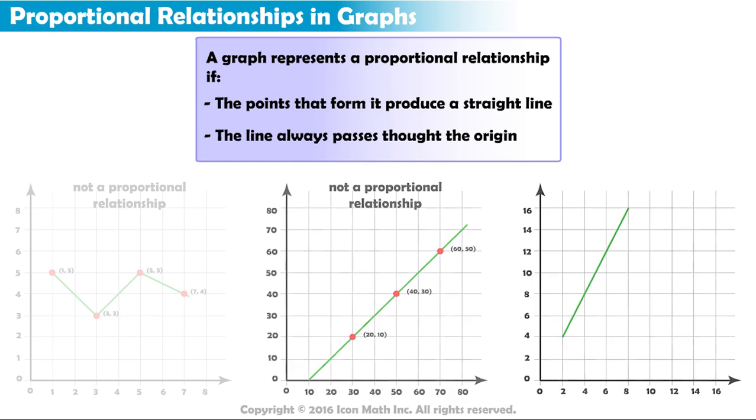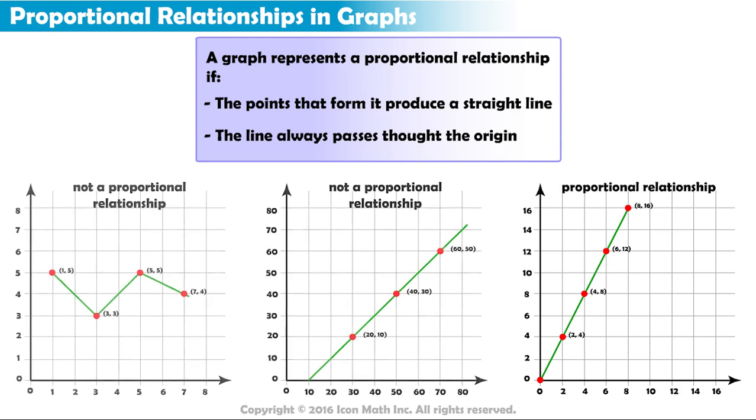Finally, the last graph does form a straight line and that line passes through the origin. So, this graph represents a proportional relationship. Great work!